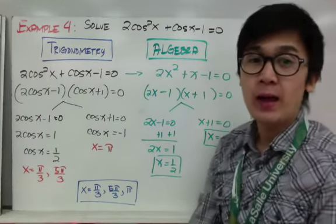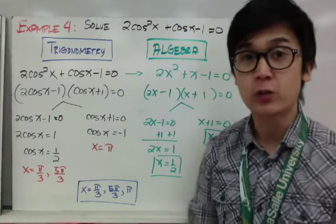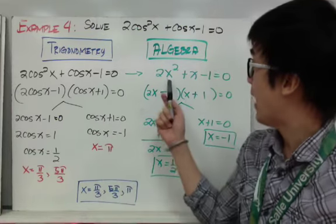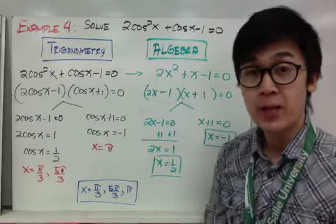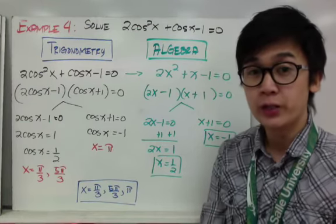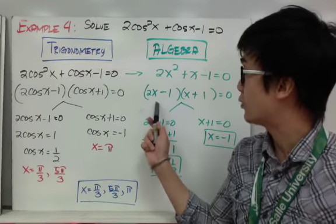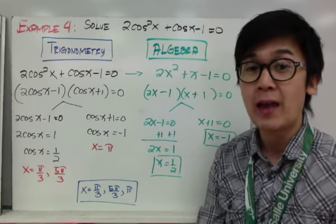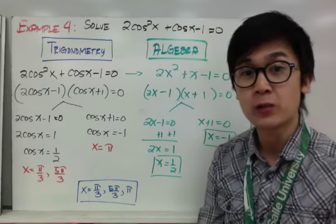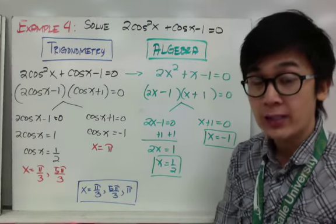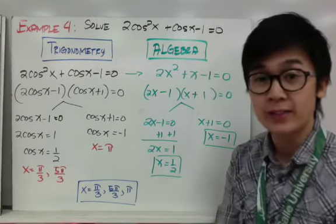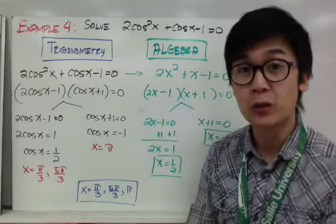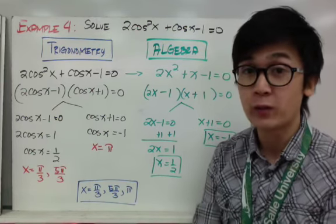For example 4: 2 cosine²x + cosine x minus 1 = 0. The algebra version is 2x² + x minus 1 = 0, which is a factorable quadratic. Factoring gives (2x minus 1)(x + 1) = 0. By the zero product property, x = 1/2 or x = negative 1. A quadratic equation yields two possible values of x.